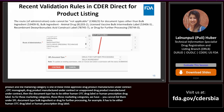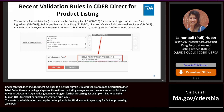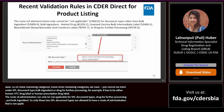The route of administration can only be 'not applicable' for SPL document types 'drug for further processing' and 'bulk ingredient.' Only these two SPL document types are allowed to have a route of administration that is not applicable. All other SPL document types must have the route of administration selected.